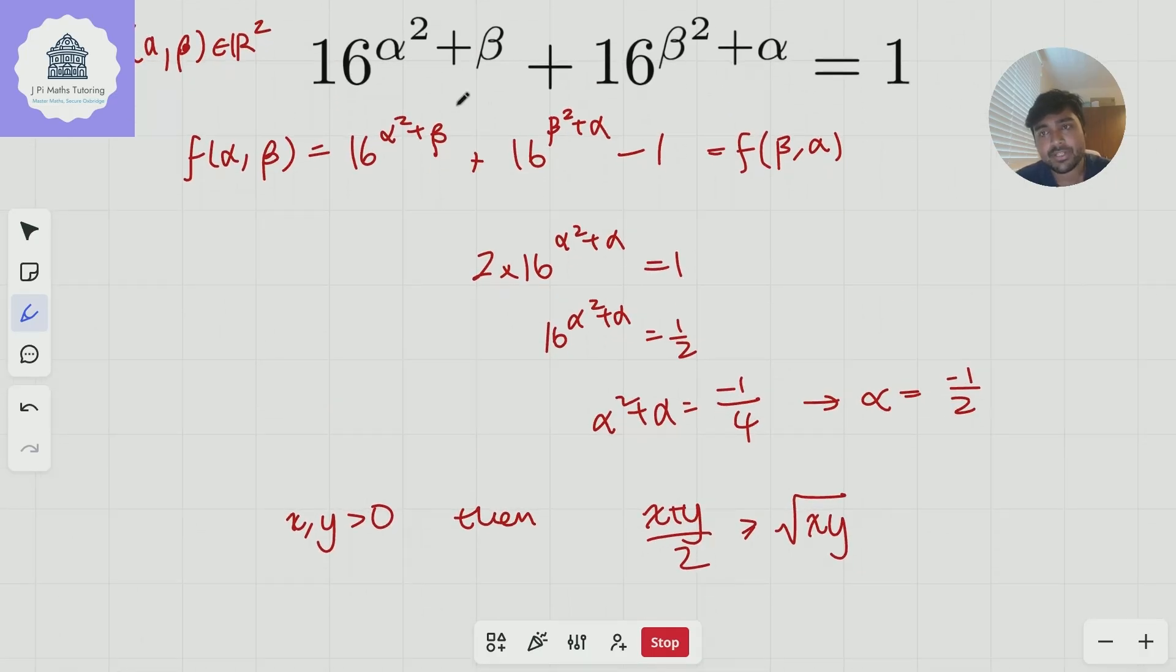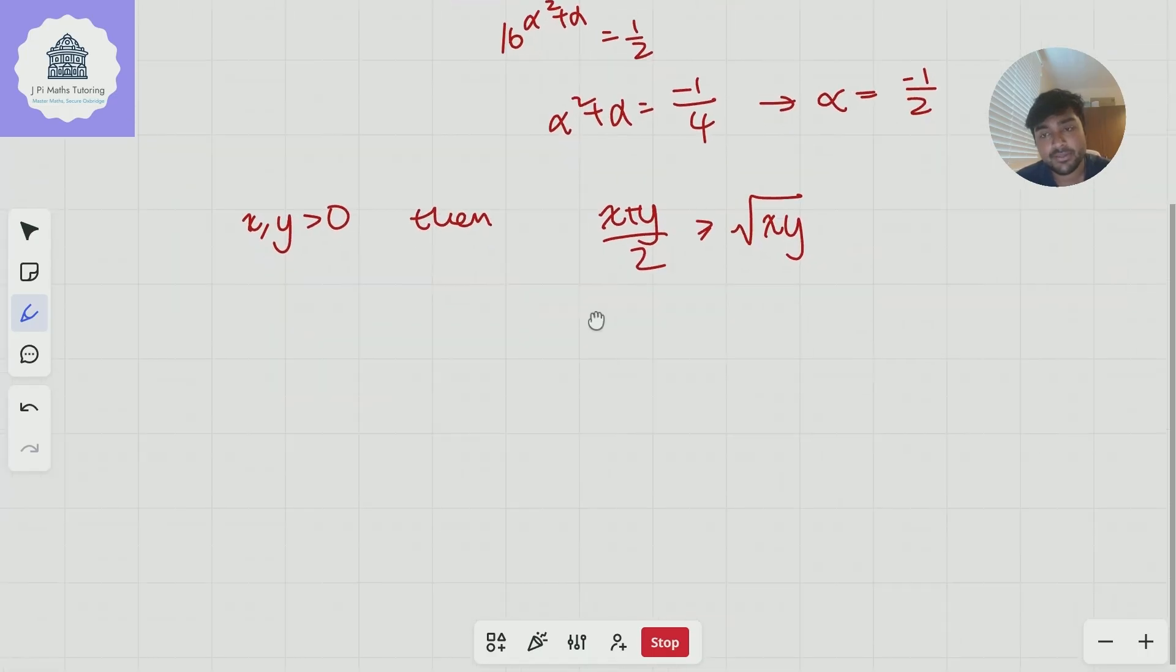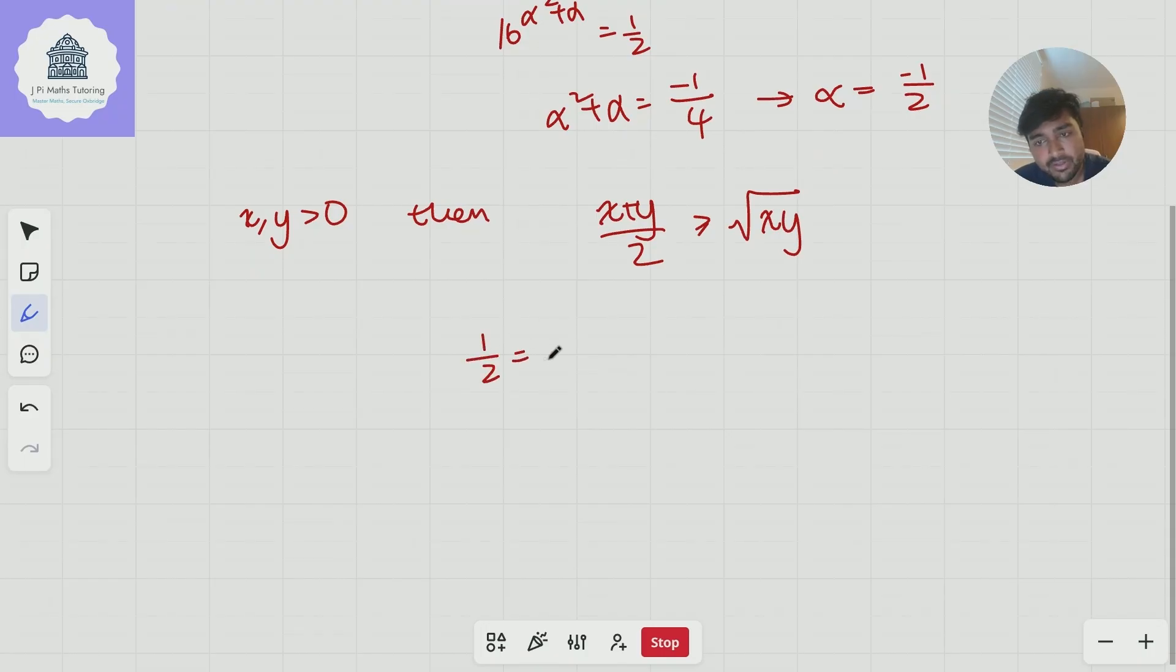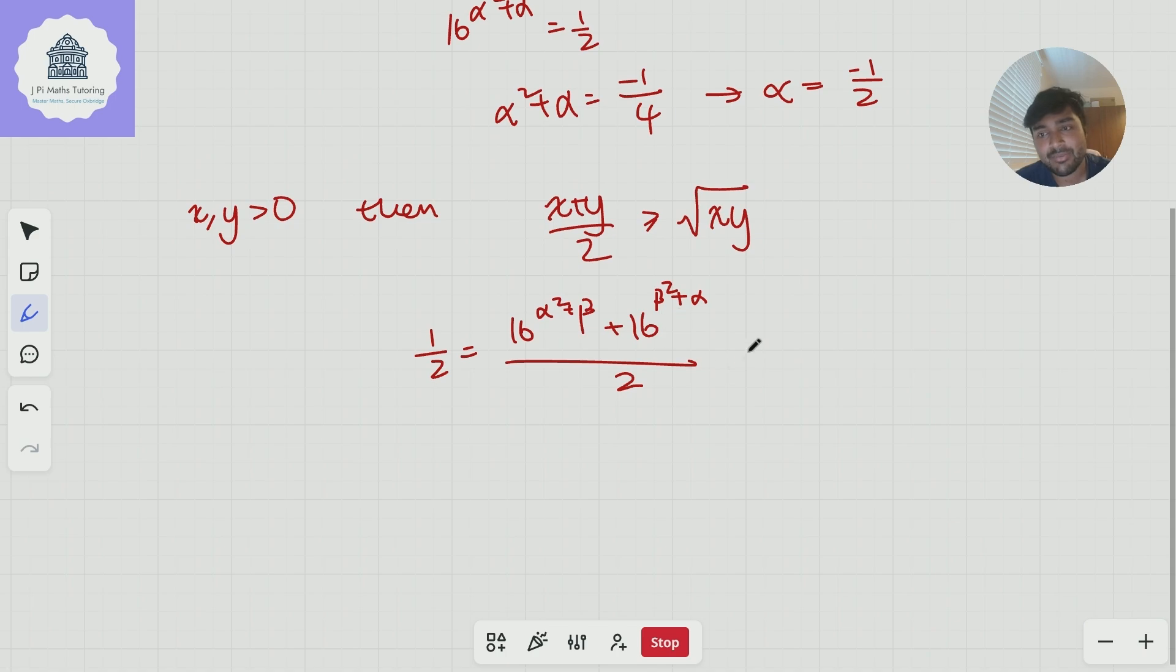So if I look at this equation here, I'm firstly going to divide both sides by two. So I'm going to get 1/2 = (16^(α²+β) + 16^(β²+α))/2. Now, according to the AMGM inequality, this is at least the square root of 16^(α²+β) times 16^(β²+α).